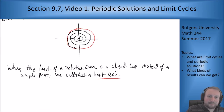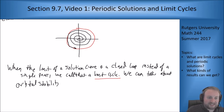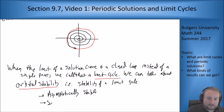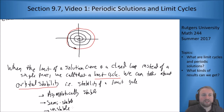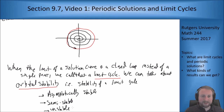We can talk about stabilities of limit cycles, just as we talk about stabilities of critical points. This is called orbital stability — the stability of a limit cycle. These can be asymptotically stable, semi-stable, or unstable, based on whether nearby curves come into the solution or go away from it as time goes on. We're going to do an example and see how to determine that we have a limit cycle and how to analyze its stability.